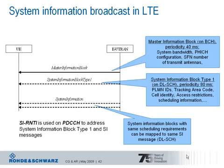System information block type 1 is already transmitted using the shared channel transmission principle and has a repetition rate of 80 milliseconds. With information from SIB type 1, the UE can check the periodicity for system information messages — there can be up to 32 messages. System information block type 2 contains information about the common and shared channel usage and therefore information on how to perform random access, including details about the random access channel and the physical random access channel.